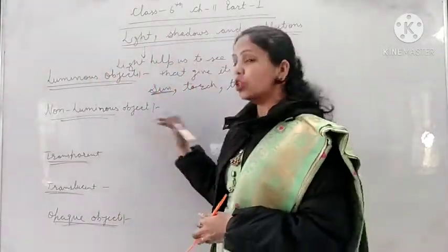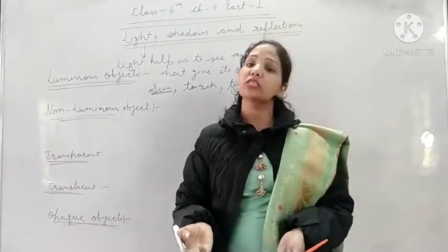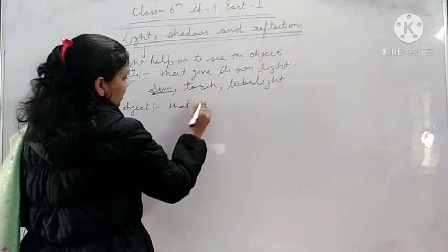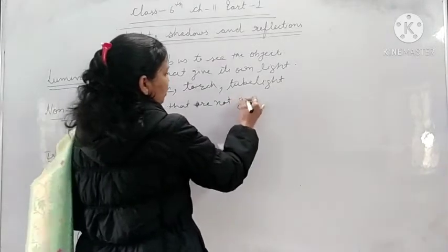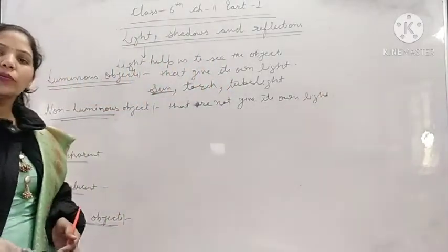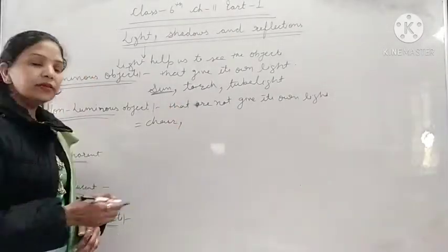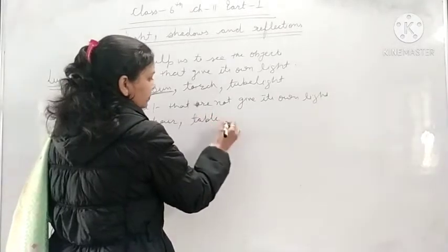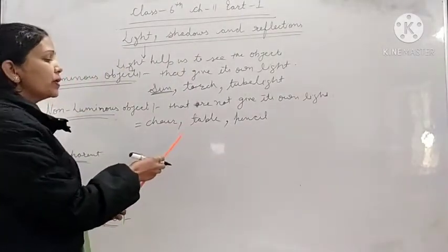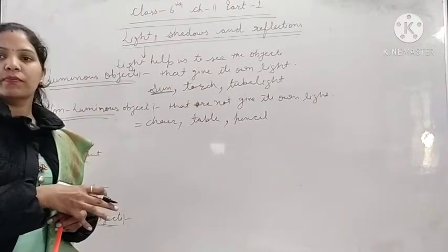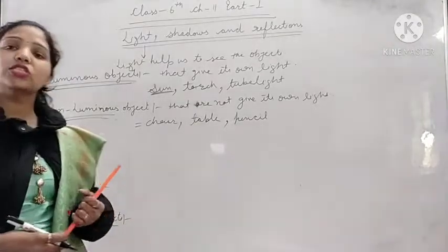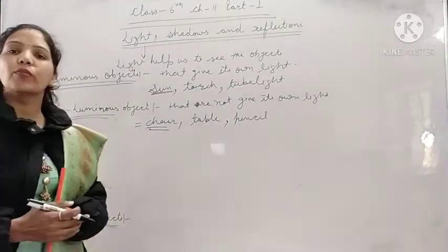Then there are non-luminous objects. The objects that do not give their own light are known as non-luminous objects. For example, a table, a pencil — these are non-luminous objects. These objects are visible only when light falls on them. They do not have their own light, so these objects are known as non-luminous objects.